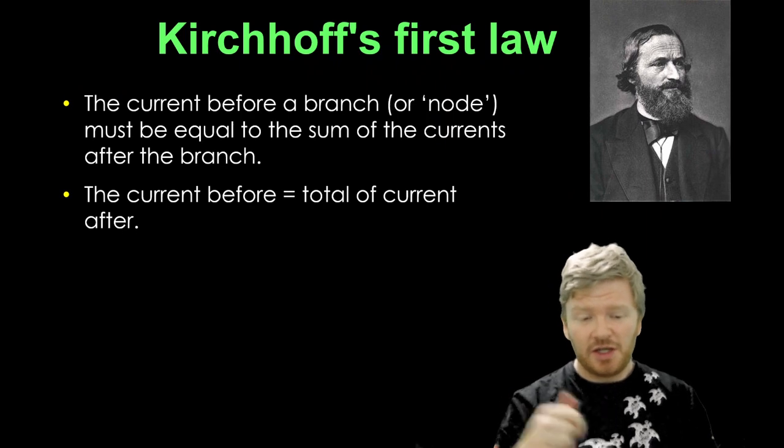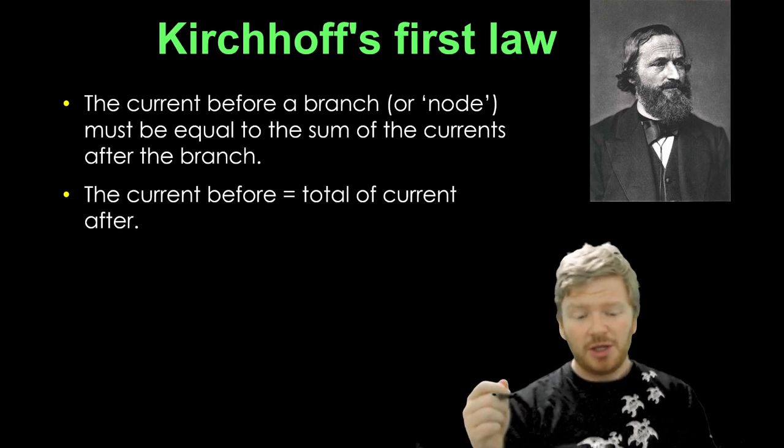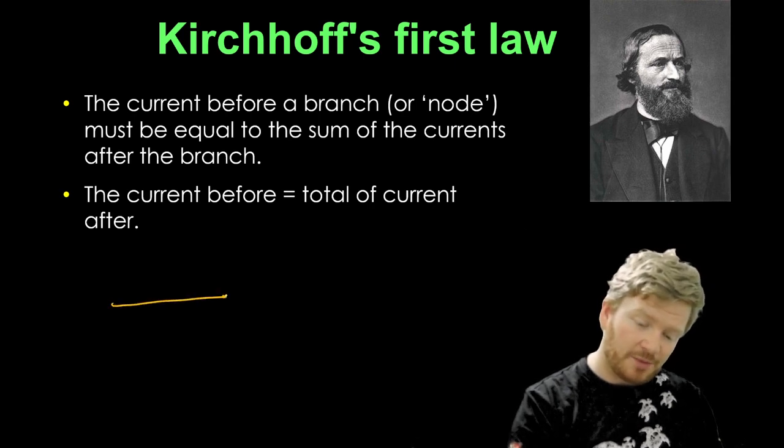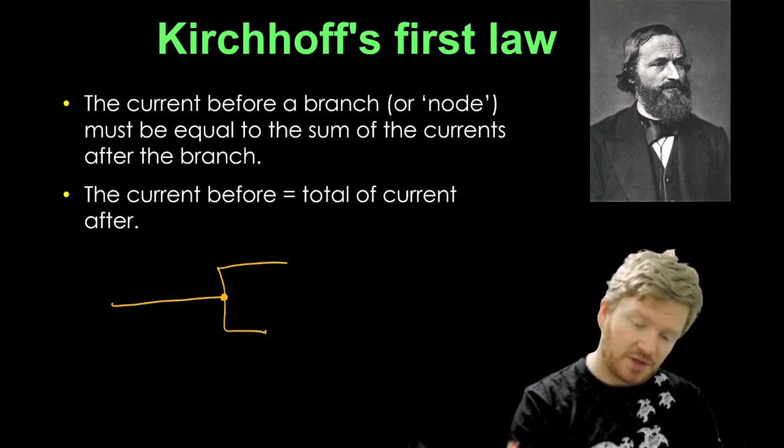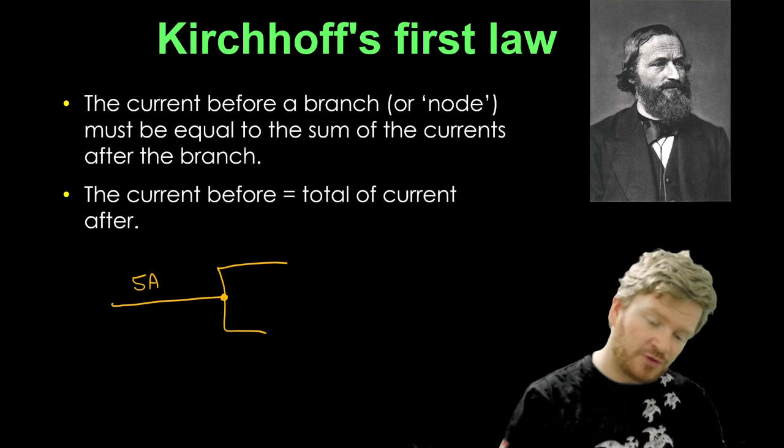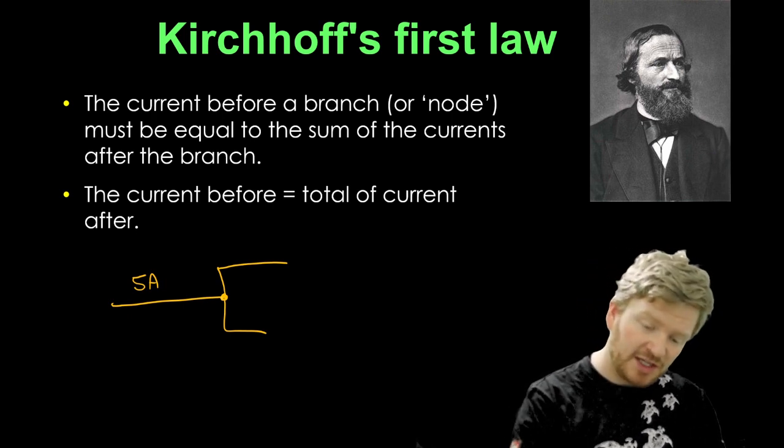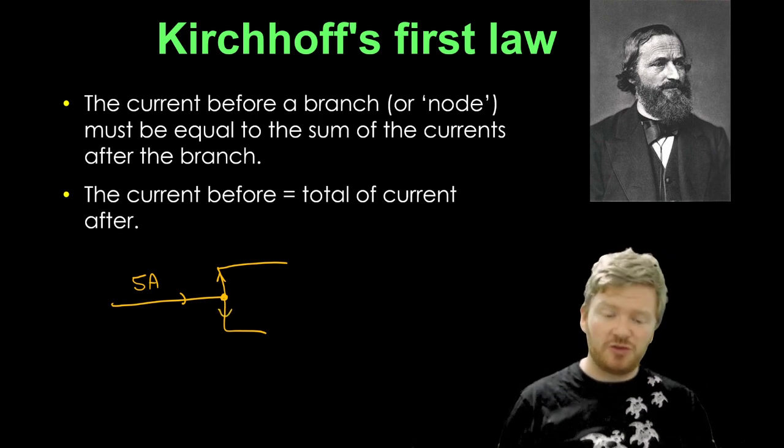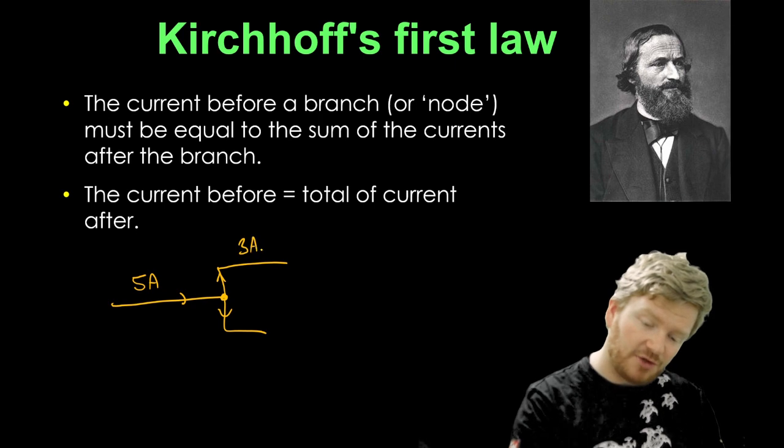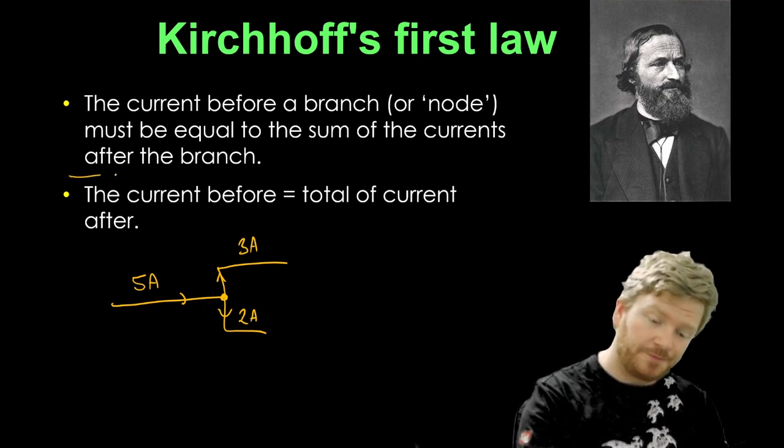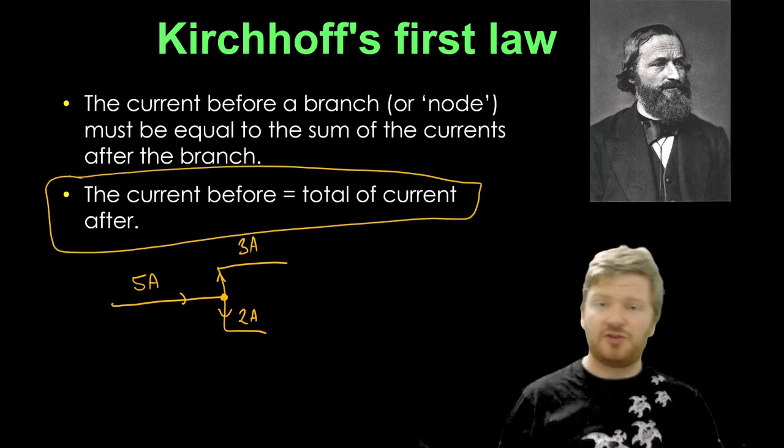So, quite simply, Kirchhoff's first law says that the current before a branch or node must be equal to the sum of the currents after a branch. So imagine you've got a wire coming here and then it splits into two separate wires. If I have five amps of current going into one branch, and here's my node, so I know that I've got to have five amps of current in total coming out. So I might have three amps there and two amps there. Or 2.5 and 2.5, it doesn't matter. But the key rule is the current before is equal to the total current after.